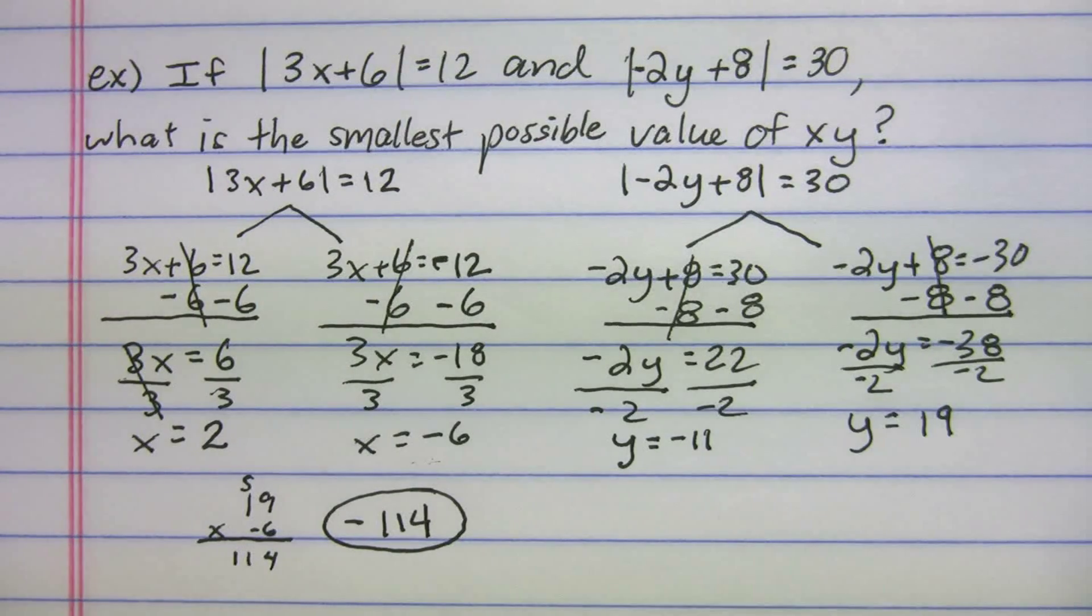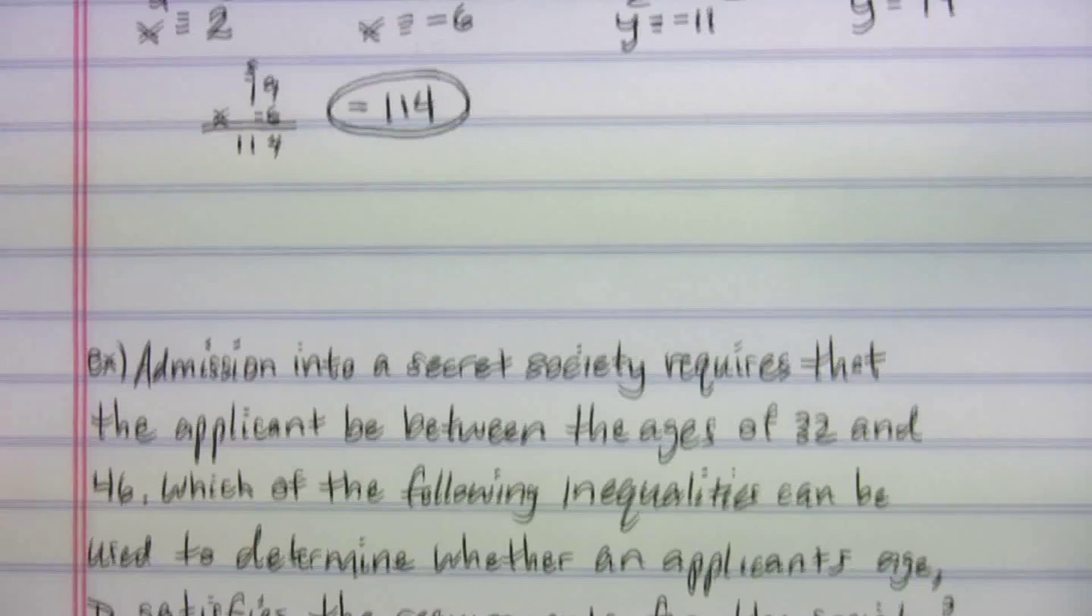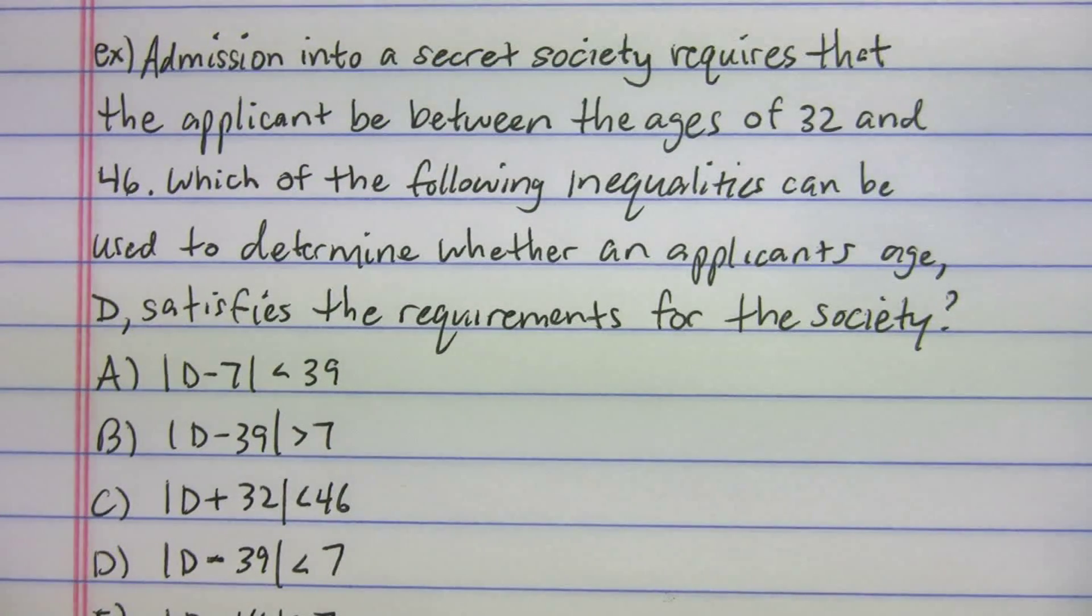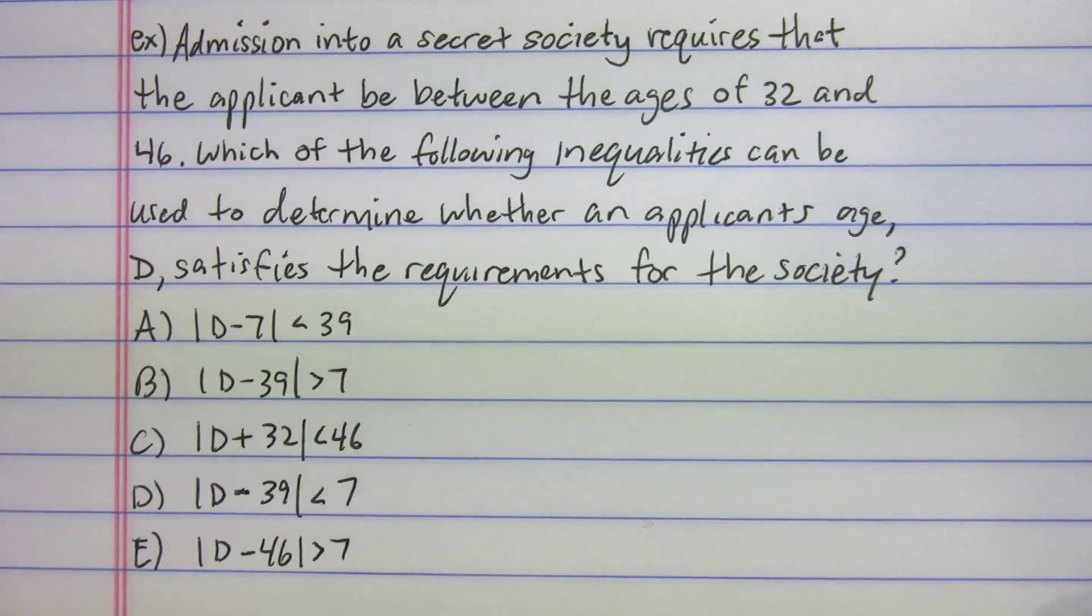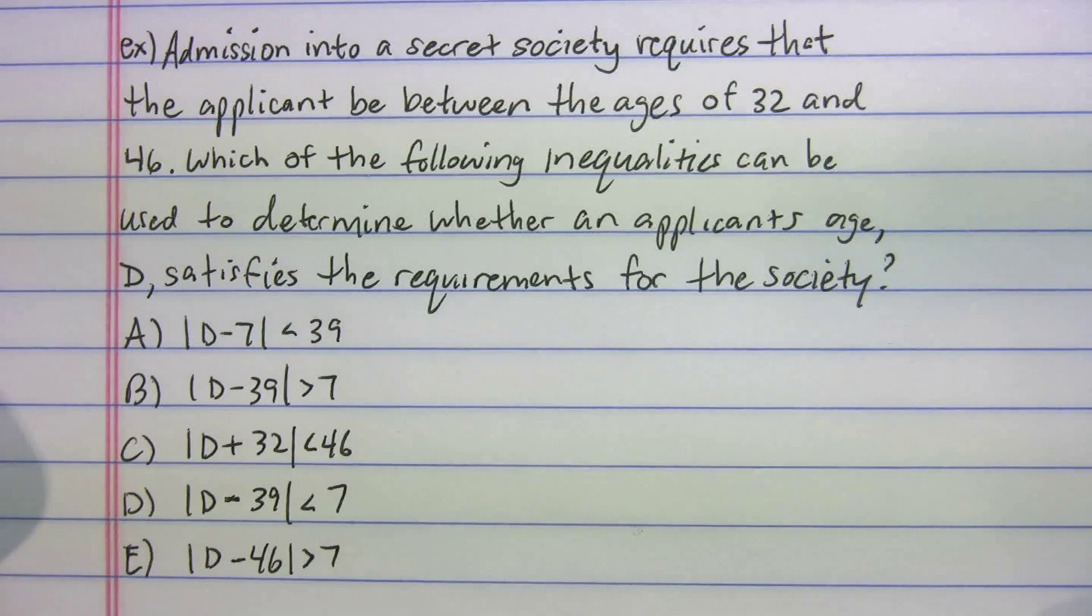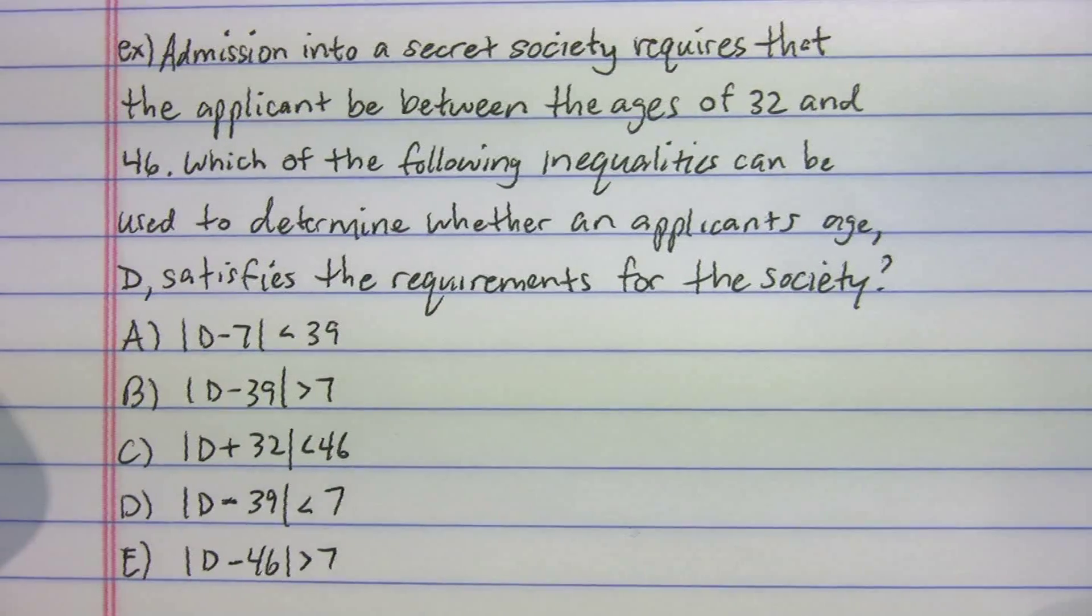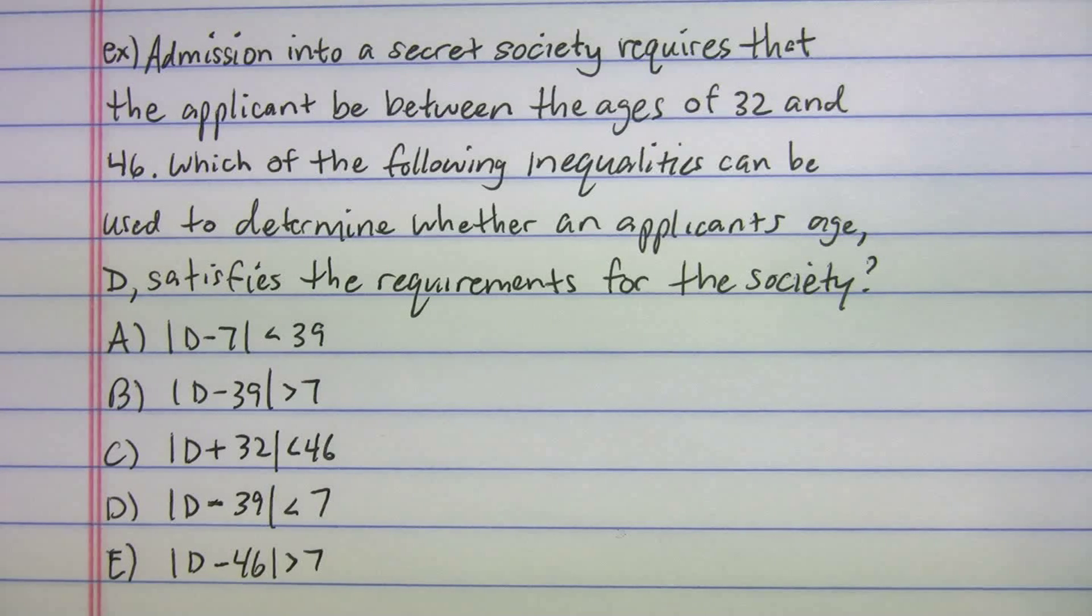Let's try another one. This one is a longer problem, so I had to write a lot here. Let me zoom out so you can read the whole thing. It says admission into a secret society requires that the applicant be between the ages of 32 and 46. Which of the following inequalities can be used to determine whether an applicant's age D satisfies the requirements for the society?